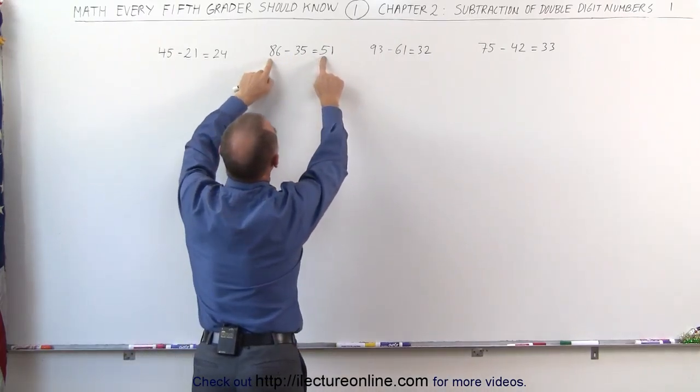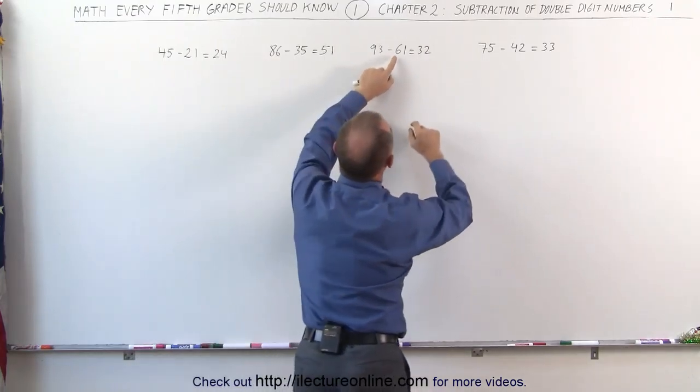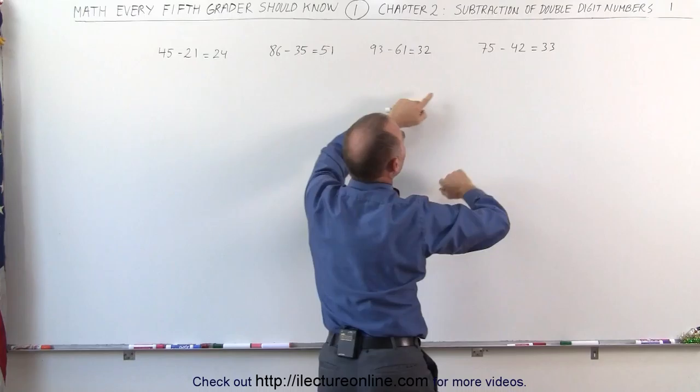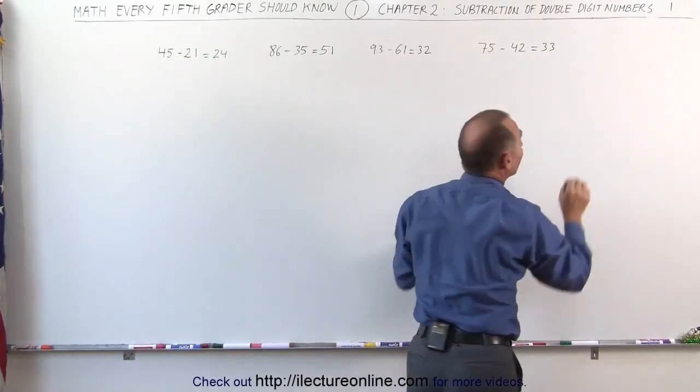3 plus 5 is 8. 5 plus 1 is 6. We did that correctly. 6 plus 3 is 9. 1 plus 2 is 3. We did that correctly. And 4 plus 3 is 7. 2 plus 3 is 5. We did that correctly.